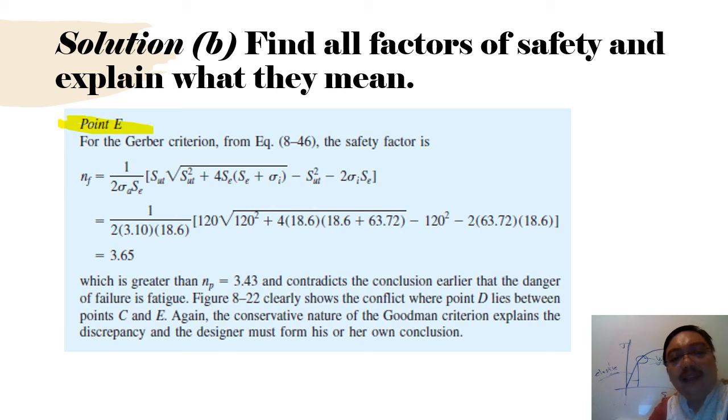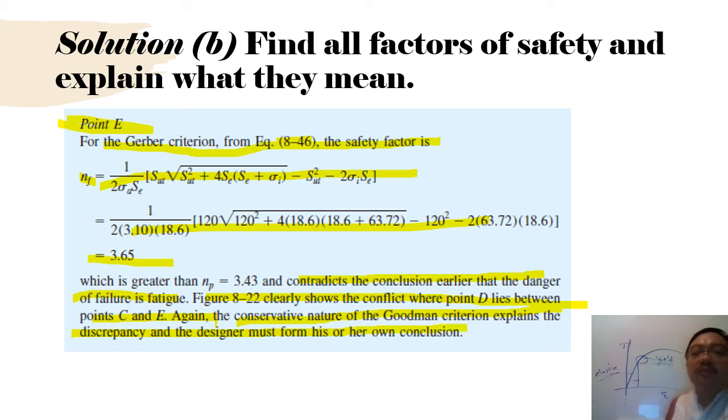For the Gerber criterion, the safety factor is np equals this equation from equation 8-46. You put all the values and get 3.65, which is greater than 3.43, confirming the conclusion earlier that the danger of failure is by fatigue. Figure 8-22 clearly shows the conflict where point D lies between points C and E. Again, the conservative nature of the Goodman criterion explains the discrepancy, and the designer must form his or her own conclusion.